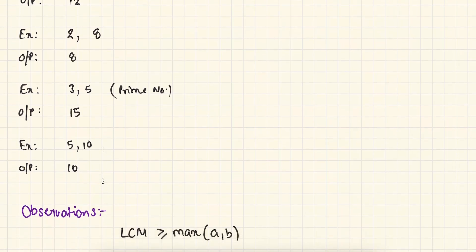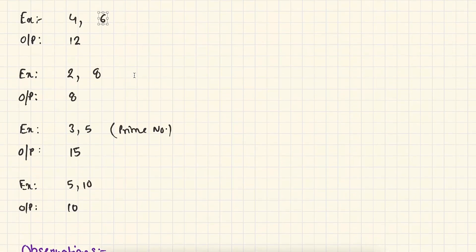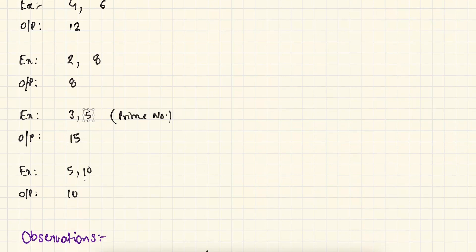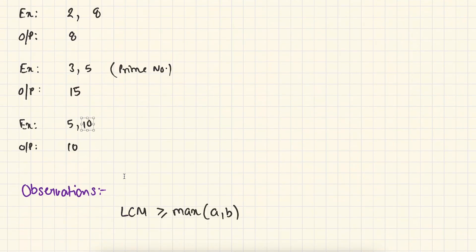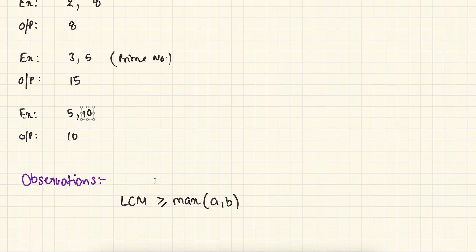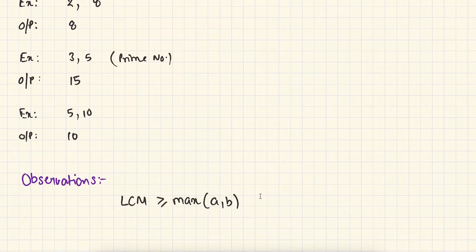Now we have observations to make. If you look at these examples closely, you may analyze that all the LCM is greater than or equal to the maximum number. So 12 is greater than or equal to 6, 8 is greater than or equal to 8, 15 is greater than or equal to 5, and 10 is greater than or equal to 10. It means our LCM is always going to be greater than or equal to max of A, B. So now let's use this idea and implement in our code.